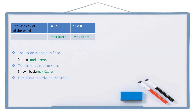Another example: I am about to arrive at the school. I — ben. School — okul. To the school — okula. Arrive — var. About to arrive — varmak üzere. I am about to arrive — üzereyim (two vowels cannot be together, so I need a buffer letter): üzereyim. I am about to arrive at the school: Ben okula varmak üzereyim.